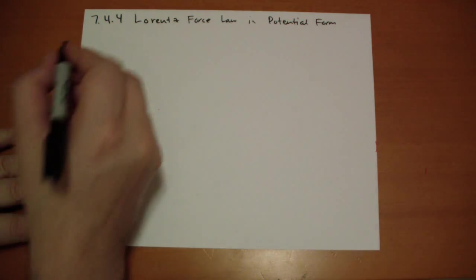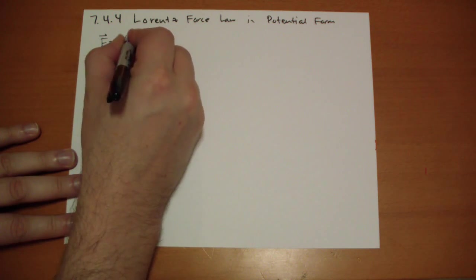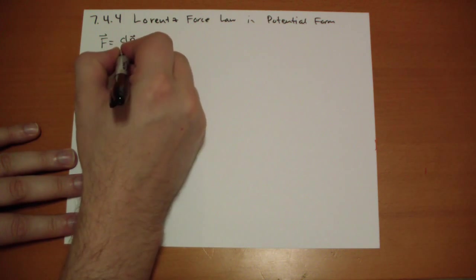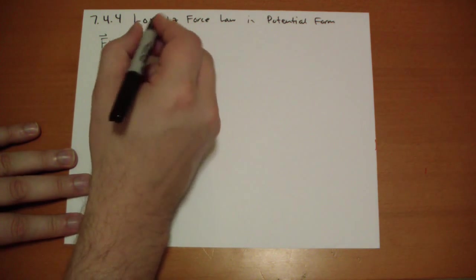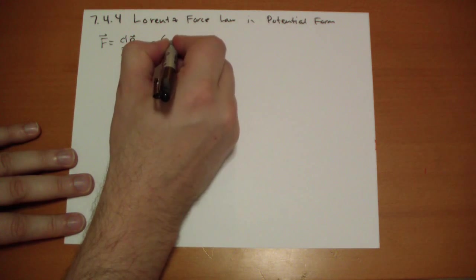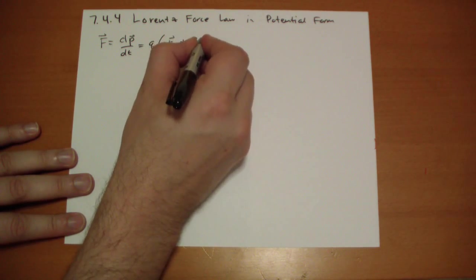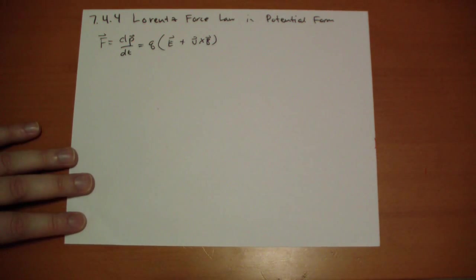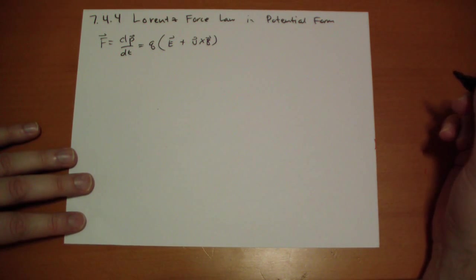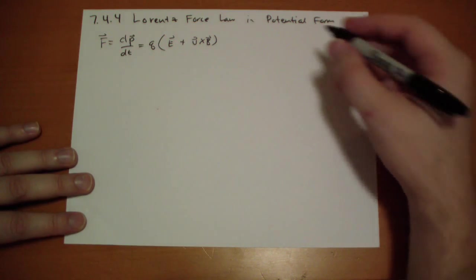The Lorentz-Force Law says the F vector, which is just the change in momentum of the particle, is equal to the charge of the particle times the electric field plus the velocity of the particle cross the B field. Let's express this in potential form rather than in the electric and magnetic fields.